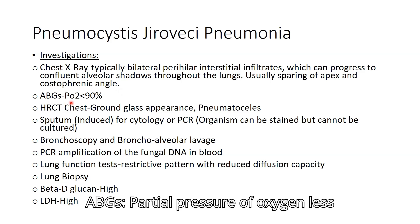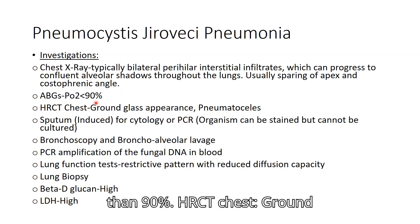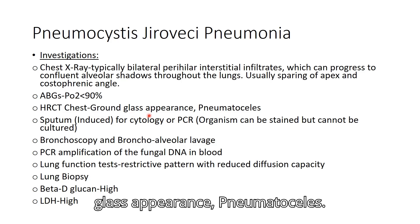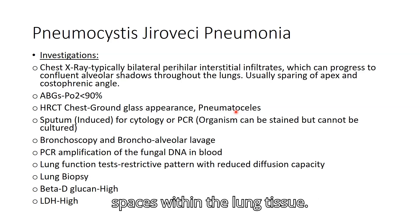ABGs show partial pressure of oxygen less than 90%. HRCT chest shows a ground-glass appearance and pneumatoceles, which are cystic air-filled spaces within the lung tissue.